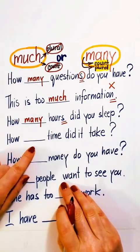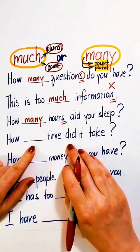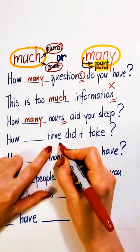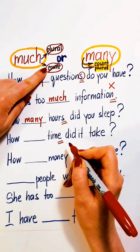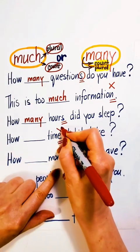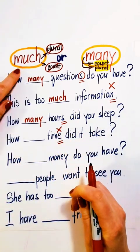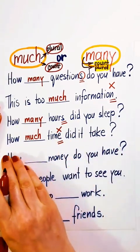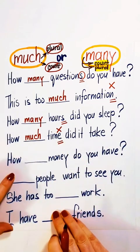How much or how many time did it take? Time is a non-count noun. It doesn't have a plural. Use much. How much time did it take?